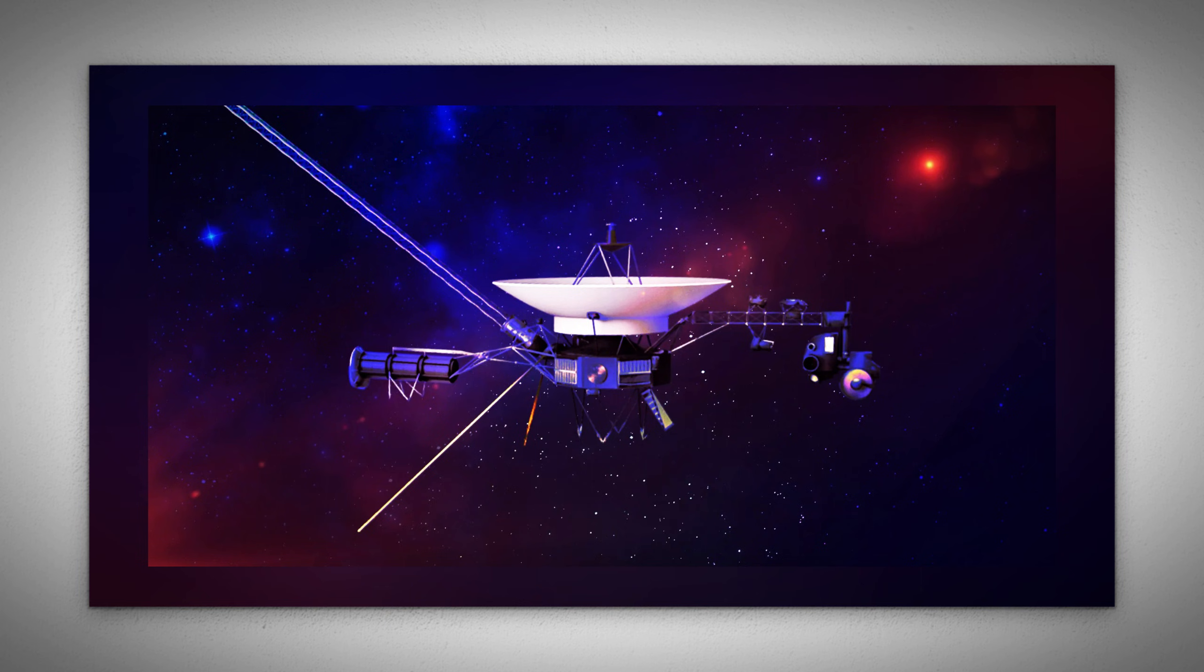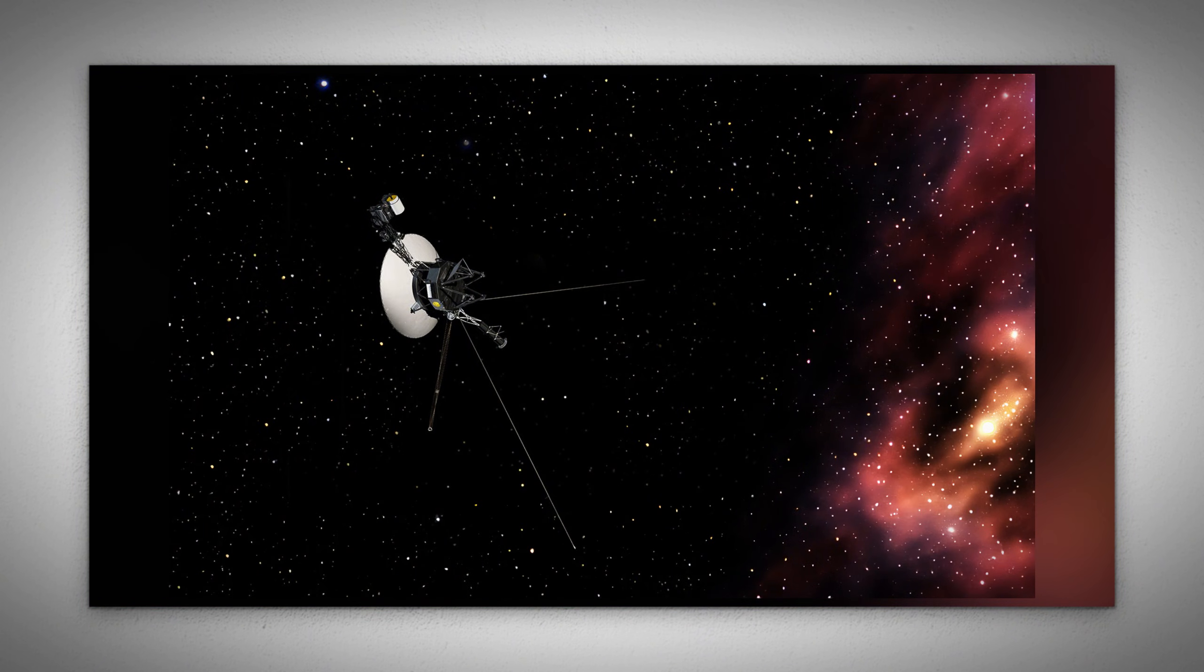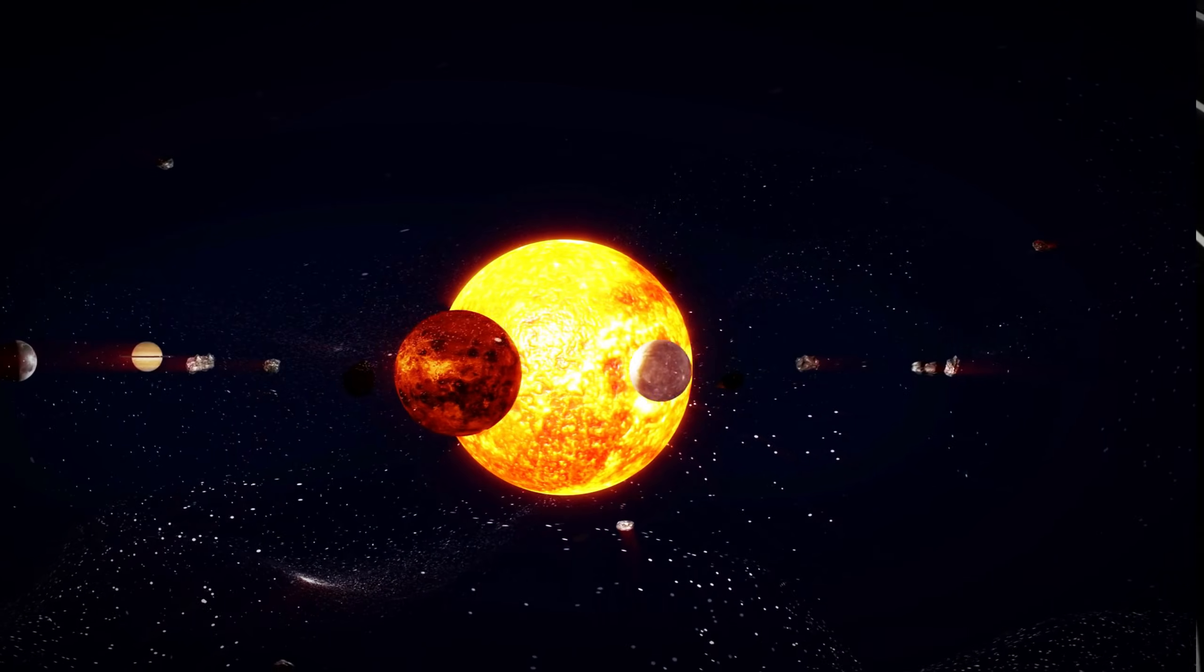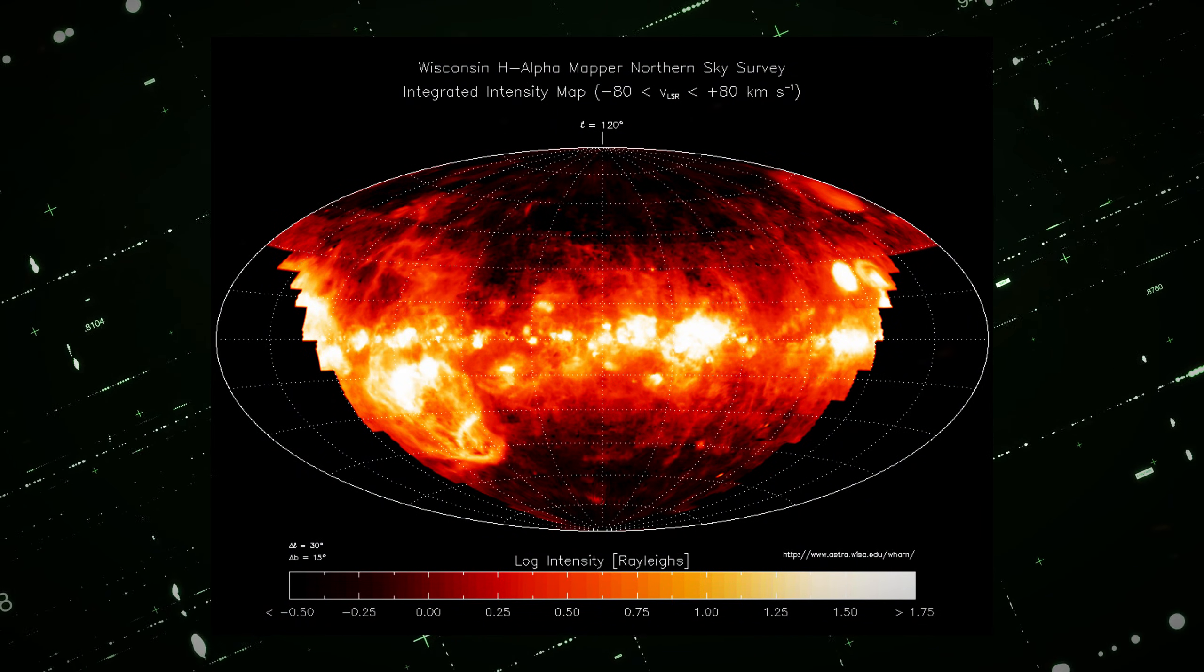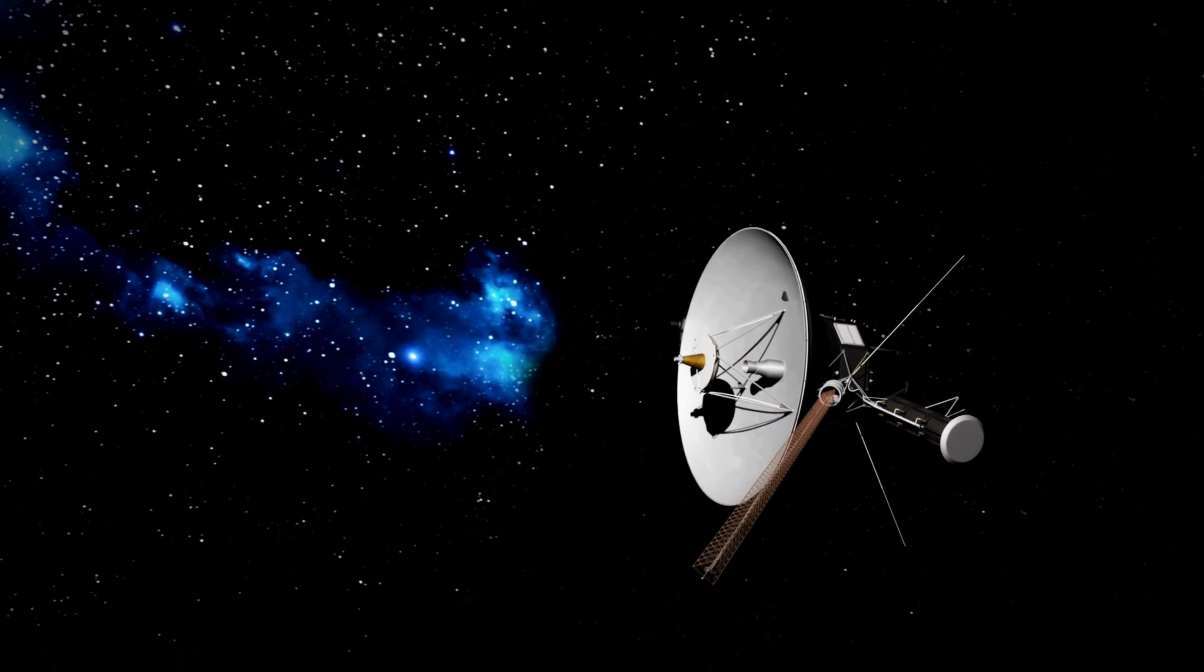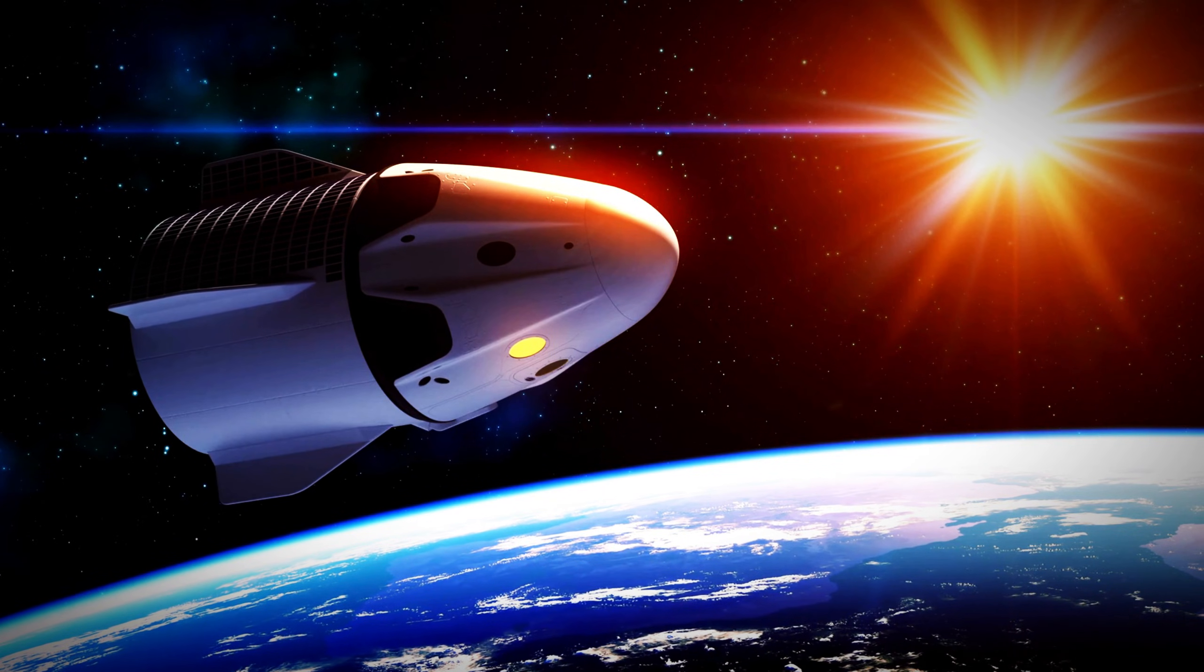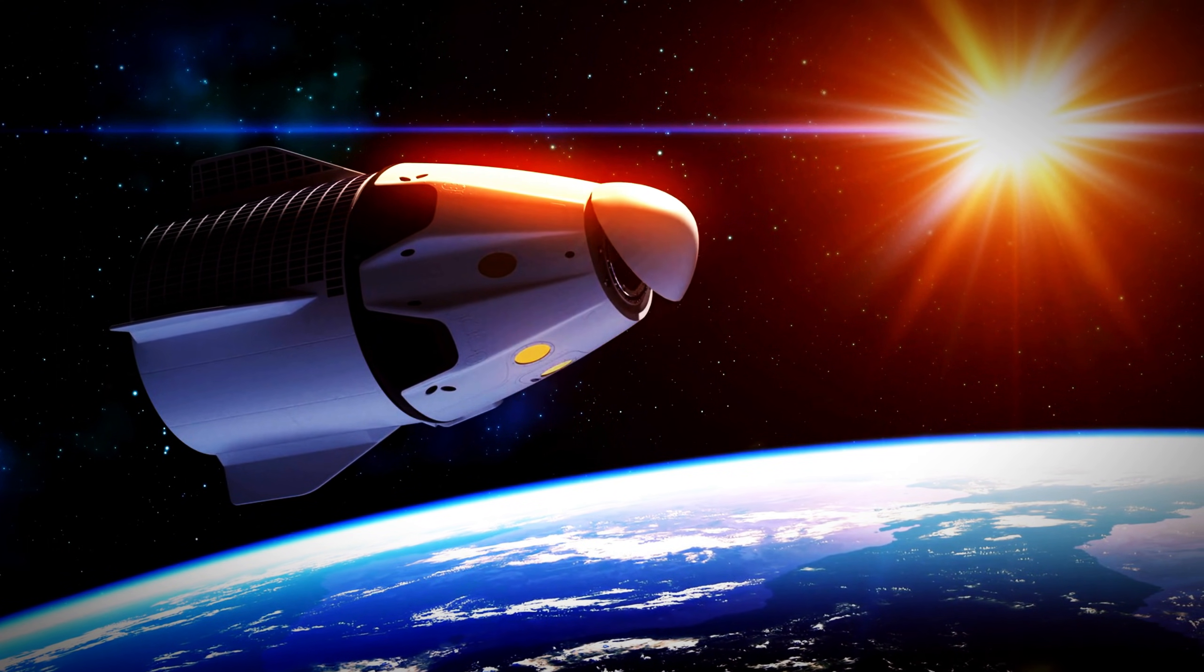On September 5, 1977, NASA's Voyager 1 was launched from Cape Canaveral, Florida, just weeks after Voyager 2's launch on August 20. Initially designed for a five-year mission to explore the outer planets, these durable probes have far exceeded expectations, continuing to send data back to Earth more than 44 years later as they journey into interstellar space. The Voyager missions took advantage of a rare planetary alignment that happens once every 176 years, enabling the spacecraft to utilize gravitational slingshots to travel from one planet to another, conserving their precious fuel.